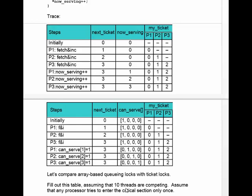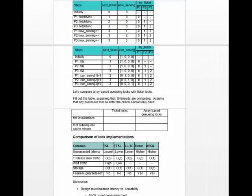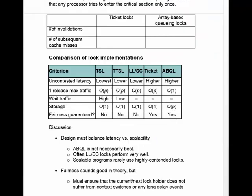Now we can compare array-based queuing locks with ticket locks based on their performance. The table shown here compares the lock implementations on four metrics. The first is uncontested latency, and you can see it's lower for the first three locks — TSL, TTSL, and LLSC — and higher for ticket and array-based queuing locks, because in those cases you have to do a fetch-and-increment before the test.